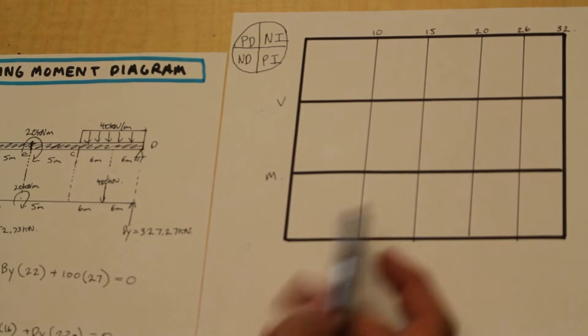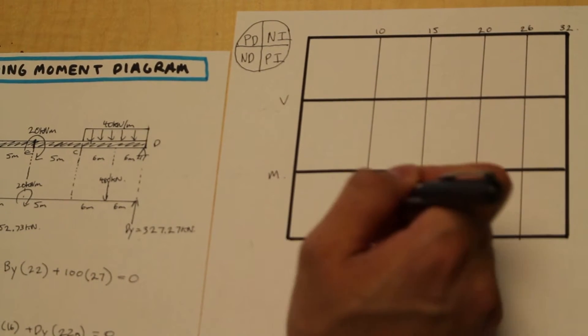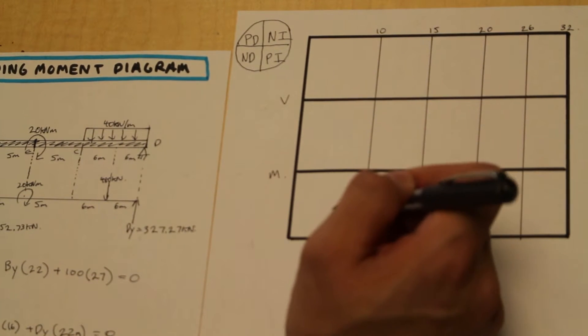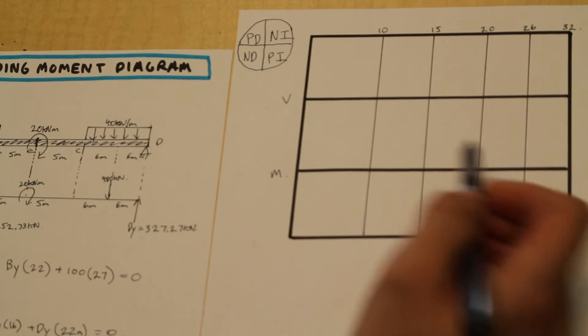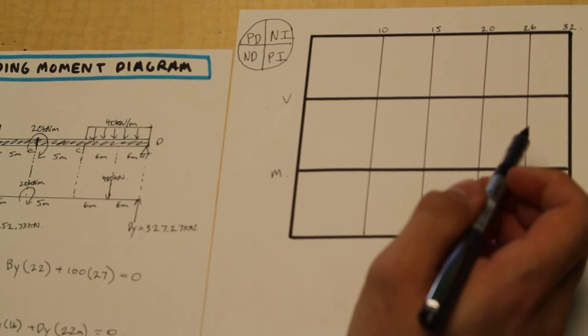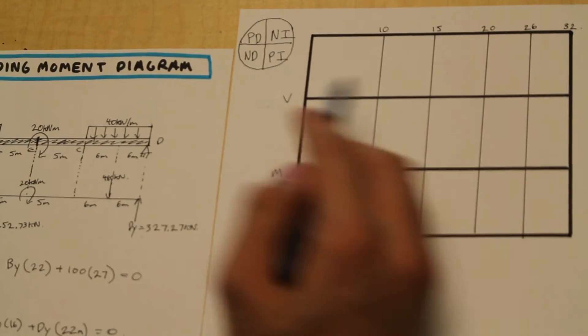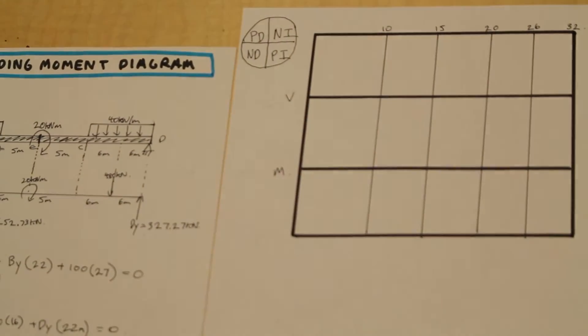And you know, if you get the shape of the moment wrong, the concave or convexity of the moment diagram, that's going to be wrong. Your professor will take marks off for that. So this is going to help us with that. So let's get started.